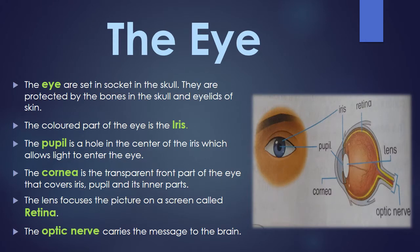The eye. The eyes are set in sockets in the skull. They are protected by the bones in the skull and eyelids of skin. Here in this picture you can see that the eye is located inside your skull and is protected by the bones of the skull. The eyelids protect your eye and the eyelids are present in the skin, and the bones are present in the skull. Both the eyelids and the skull bones protect your eye.